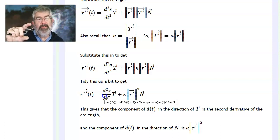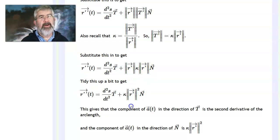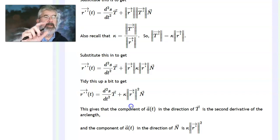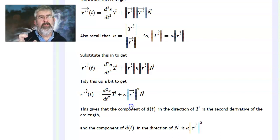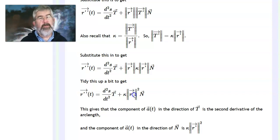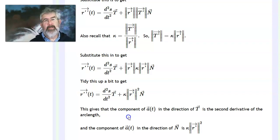Once you have that other side, you can also find the curvature: just divide the normal component by the length of r′ squared, since that component equals the curvature times the speed squared. So this gives another way to calculate curvature — project r″ onto r′, find that projection length, apply Pythagoras with the length of r″ as the diagonal to get the perpendicular side, and then divide by the speed squared. And there are the tangential and normal components of the acceleration vector.